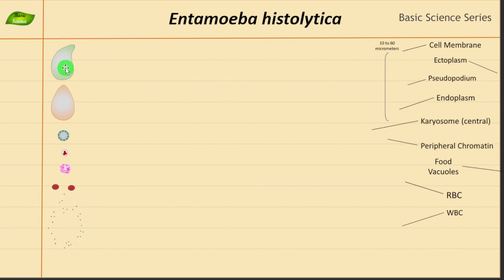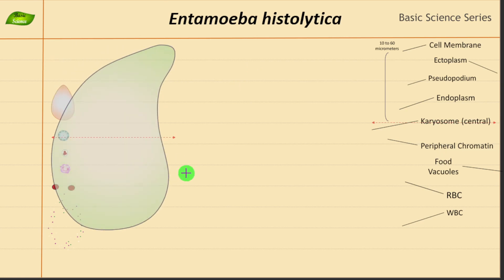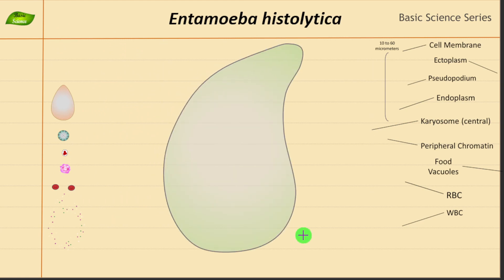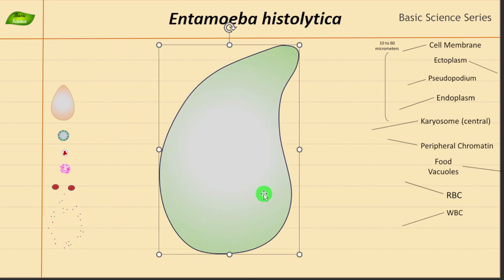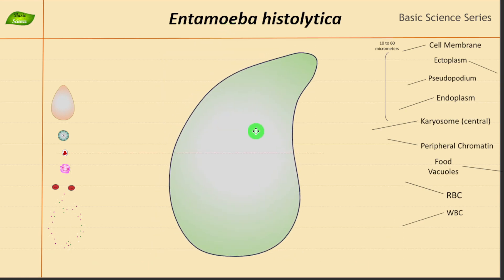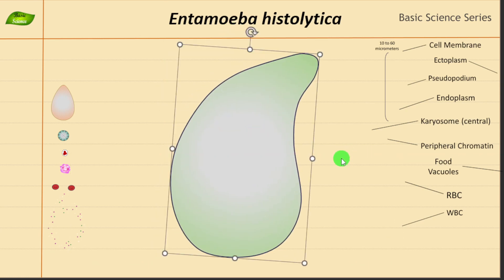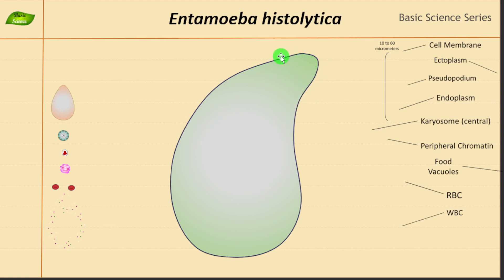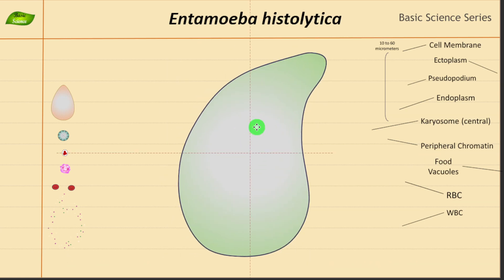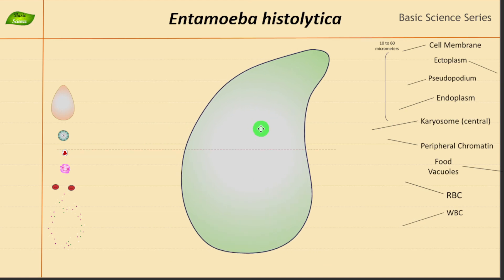I will start with the outline. The outline of Entamoeba histolytica will look something like this — you will see similar images in various textbooks. It has this irregular shaped structure. It has some projections coming out, and they are useful for the motion of the organism. So this is the outline I will use for the illustration.